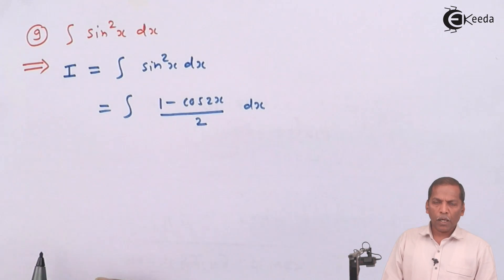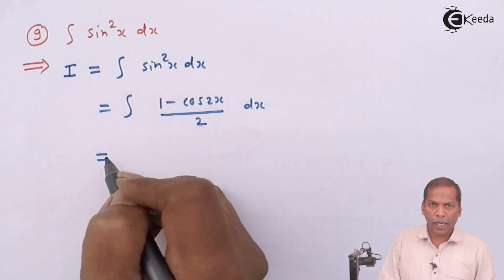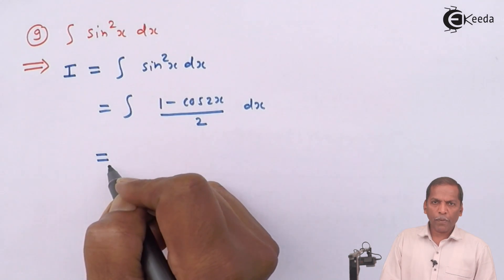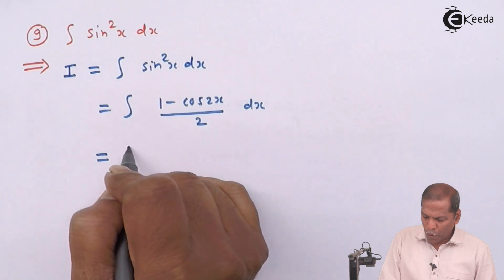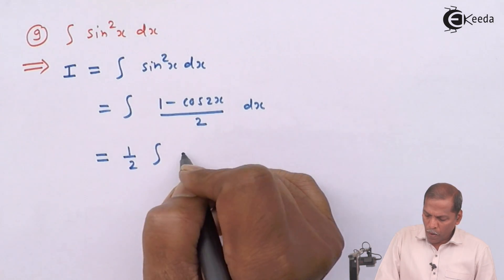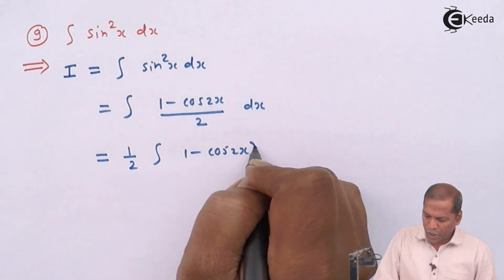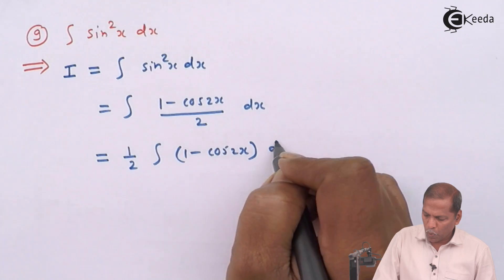Since here the term present in the denominator, that is 2, is a constant term, so we take it outside the integral sign. So the next step will be 1 upon 2 integral 1 minus cos of 2x into dx.